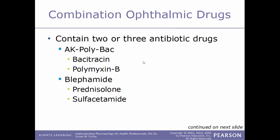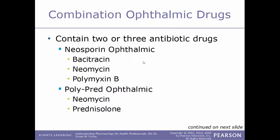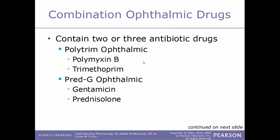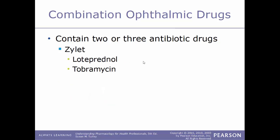Another type of combination drug in ophthalmic pharmacology are combination antibiotic drugs, which contain two or three types of antibiotics working together. Examples include: AK-Poly-Bac, a combination of bacitracin and polymyxin B; Blephamide, a combination of prednisolone and sulfacetamide; Maxitrol, a combination of neomycin, dexamethasone, and polymyxin B; Metimyd, a combination of prednisolone and sulfacetamide; Neosporin Ophthalmic, a combination of bacitracin, neomycin, and polymyxin B; Poly-Pred Ophthalmic, neomycin and prednisolone; Polytrim Ophthalmic, polymyxin B and trimethoprim; Pred-G Ophthalmic, gentamicin and prednisolone; TobraDex ST, dexamethasone and tobramycin; Vasocidin, sulfacetamide and prednisolone; and Zylet, tobramycin and loteprednol.